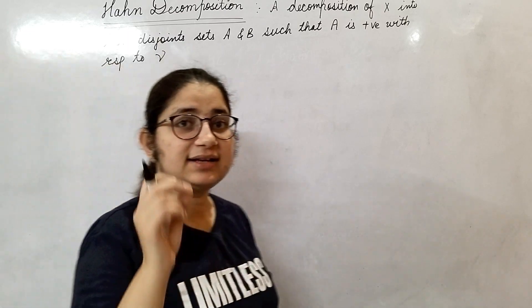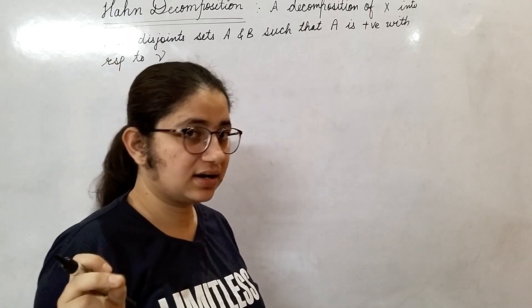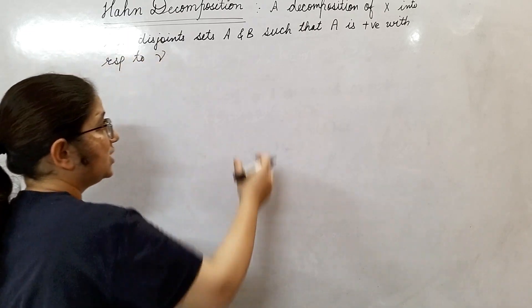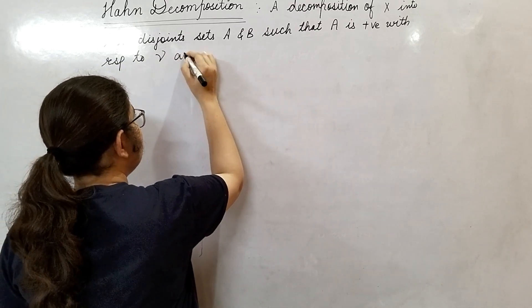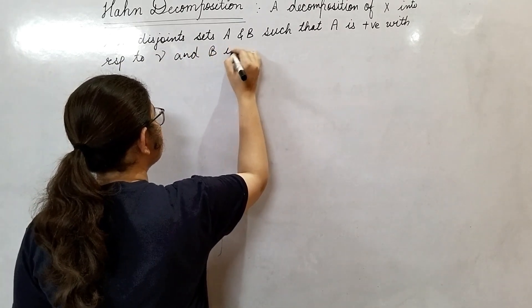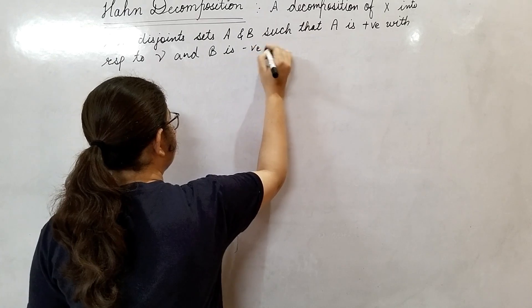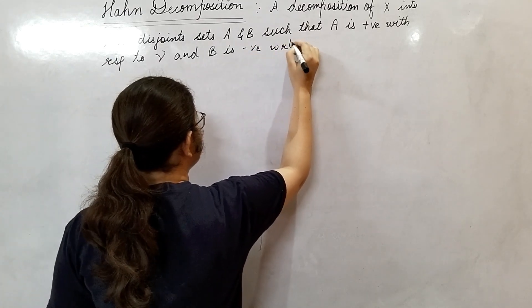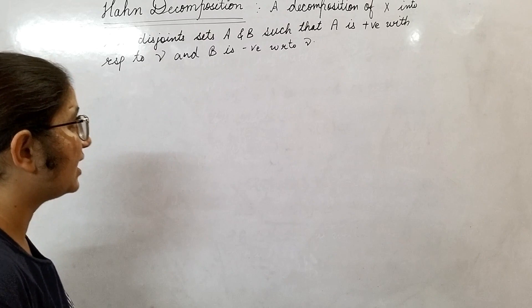I told you that one set will be positive and another set will be negative. So here A is positive and B is negative with respect to signed measure nu.